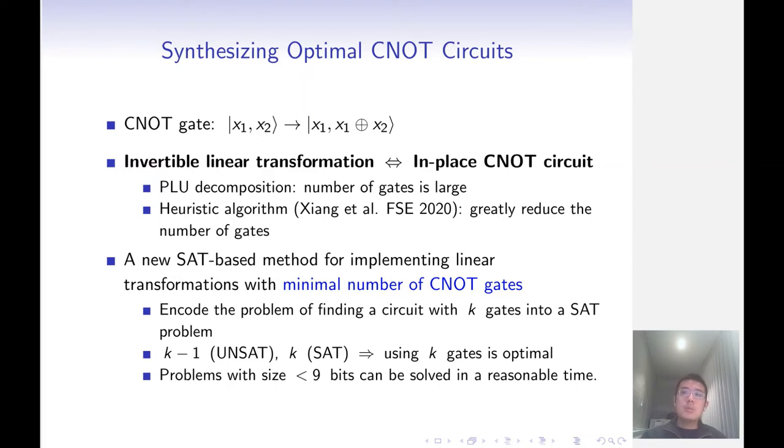Here, we propose a new SAT-based method for finding CNOT circuit with the minimal number of gates. The idea of our method is encoding the problem of finding a circuit with k gates into a SAT problem. Our experiments show that, by our method, problems with size less than 9 bits can be solved in a reasonable time.